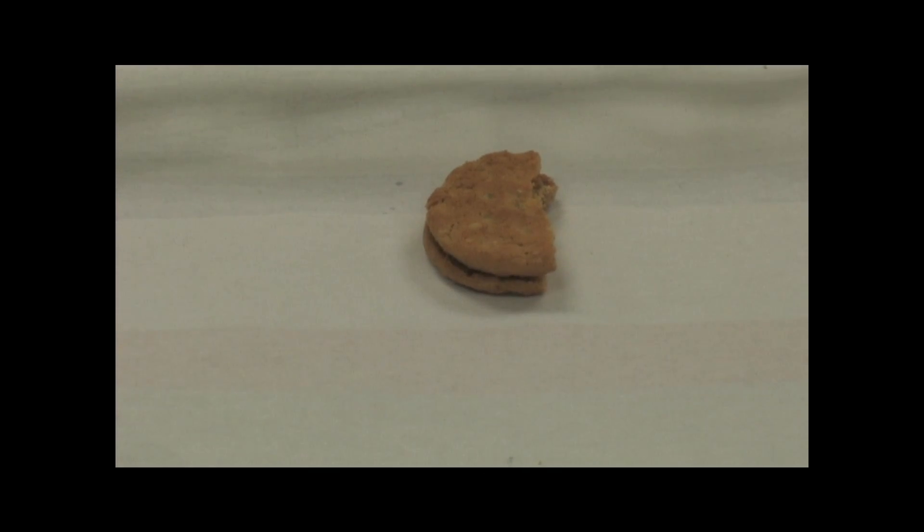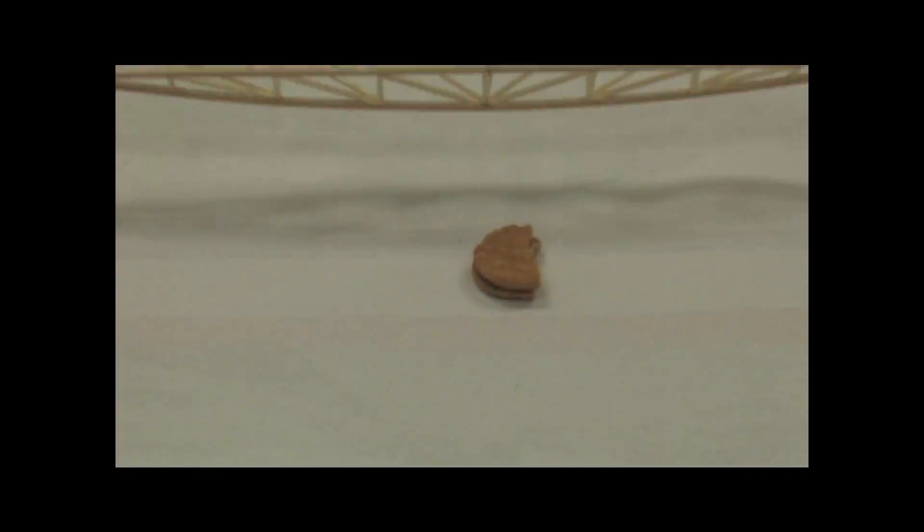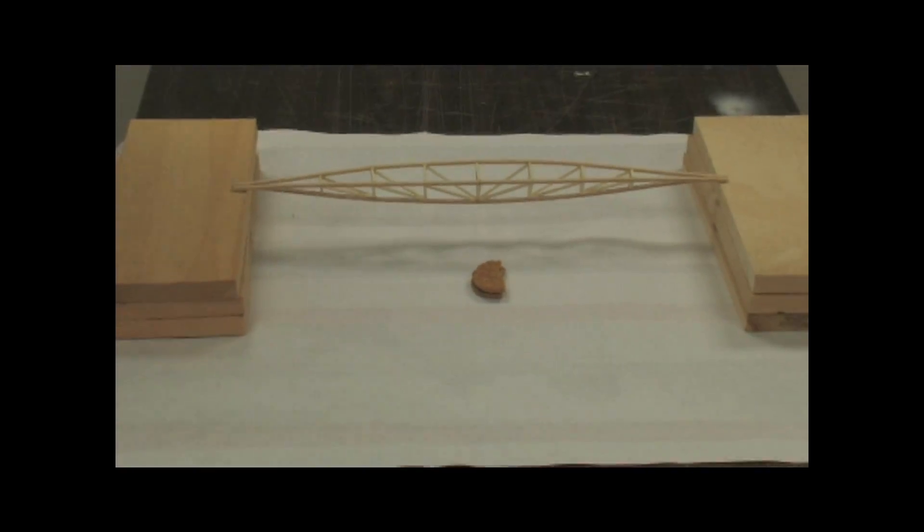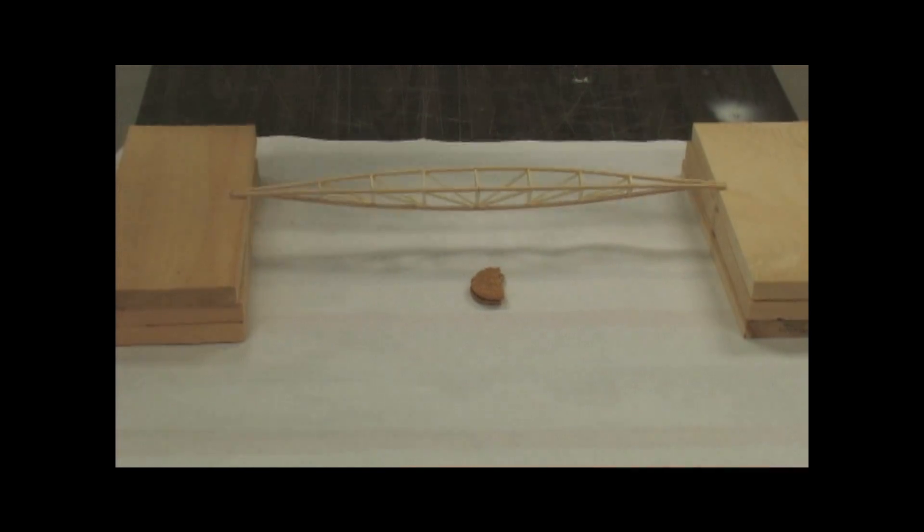For scale, we're going to use a Girl Scout do-si-do cookie, as you see here. This is a space truss. It looks very familiar, as you see.